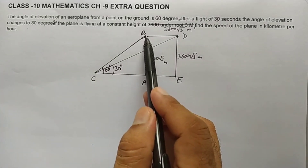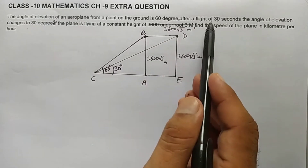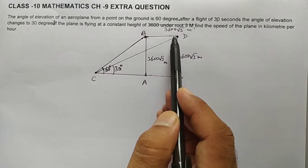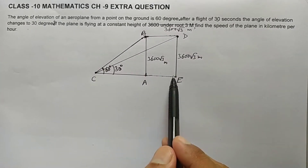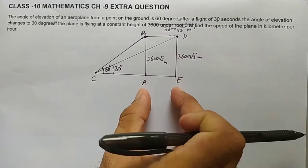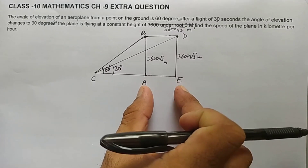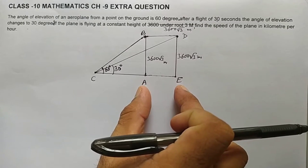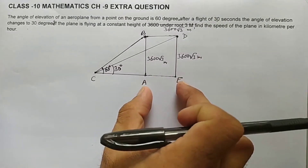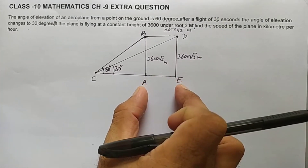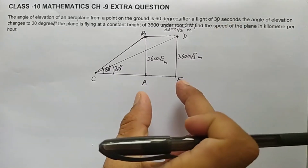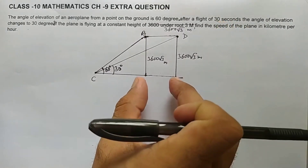To find the speed, we use speed equals distance over time. We already have the time — 30 seconds. Our goal is to find distance AE (which equals BD). We'll find CE from the big right triangle CDE, find AC from the small right triangle ABC, and then AE equals CE minus AC. Once we have AE, dividing by 30 seconds gives the speed.